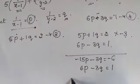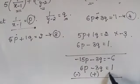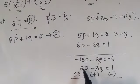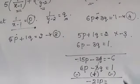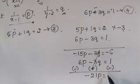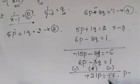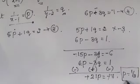Now let me subtract these two equations. Minus 3q and plus 3q cancel. Minus 15p minus 6p gives minus 21p, and minus 6 minus 1 gives minus 7. So p equals minus 7 divided by minus 21, which gives p equals 1 divided by 3.